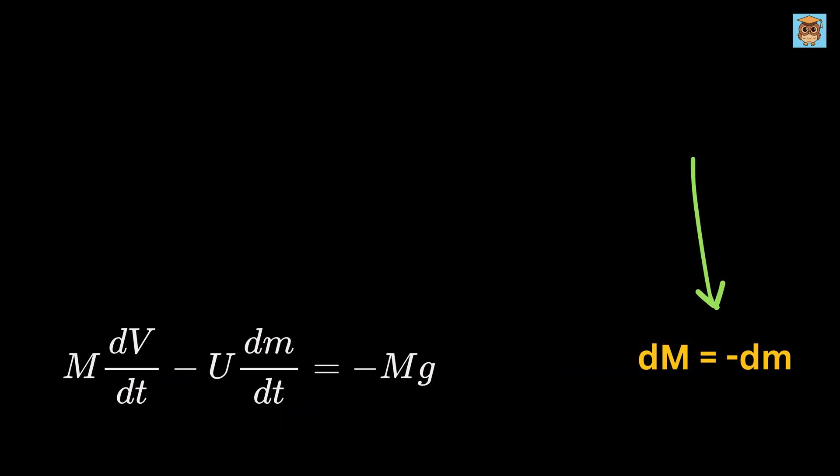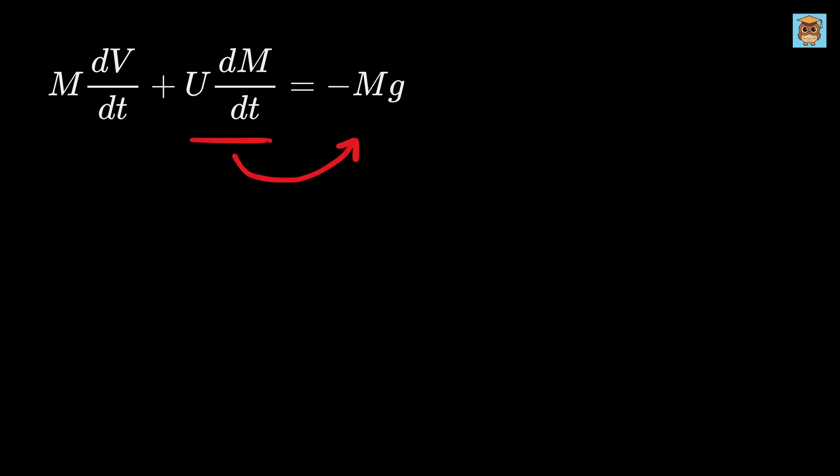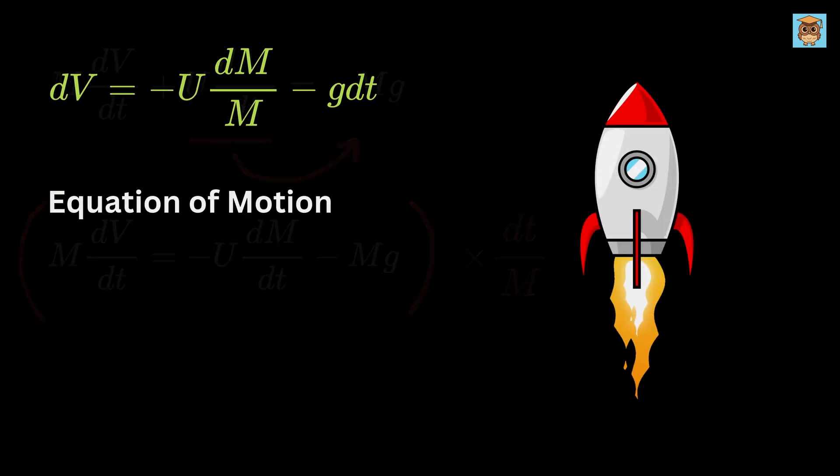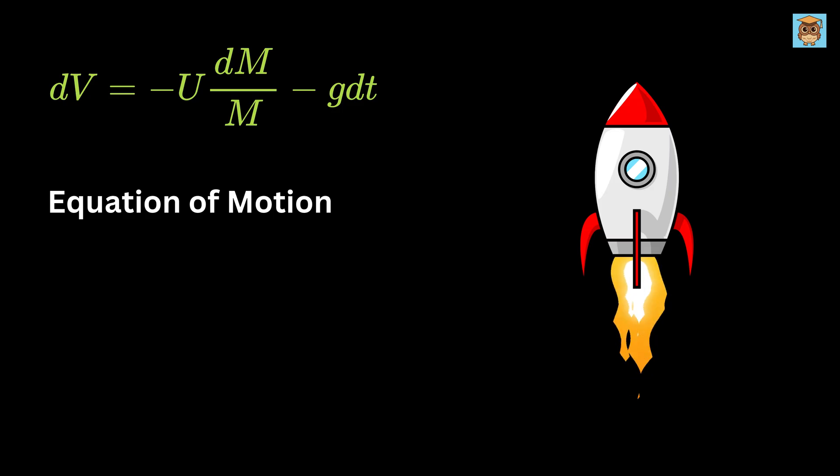Do you remember dM equals minus dm? Let us put it here. Now take this on the right-hand side. Finally, multiply both sides by dt over M. This is the equation of motion governing how the rocket's velocity changes as it burns fuel under the effect of gravity. Amazing!